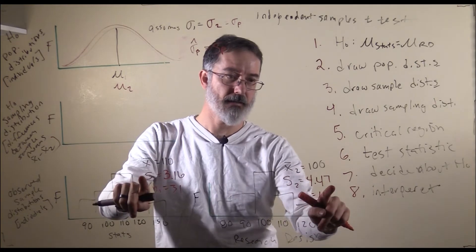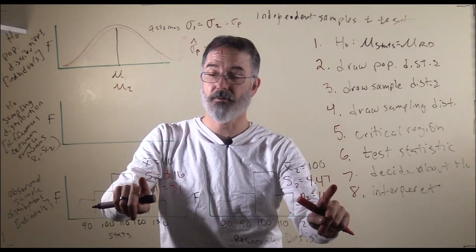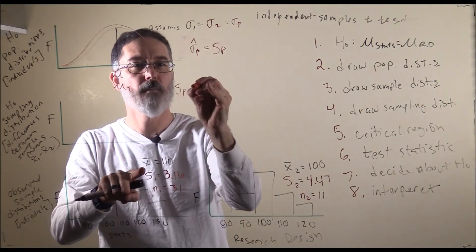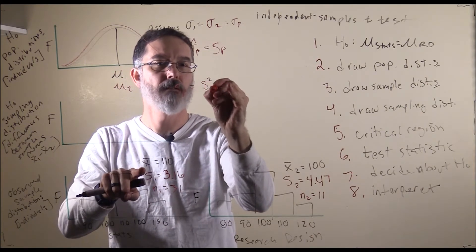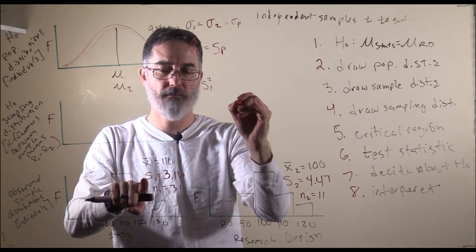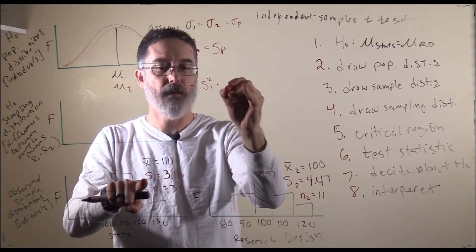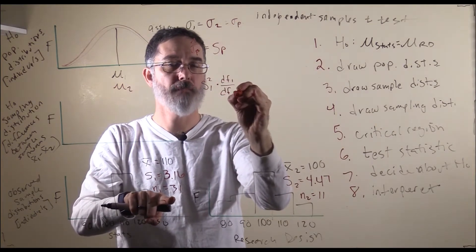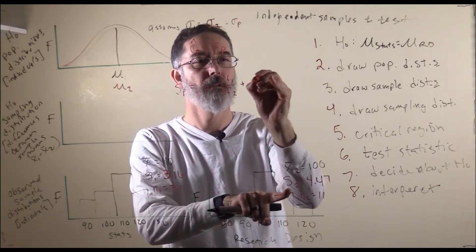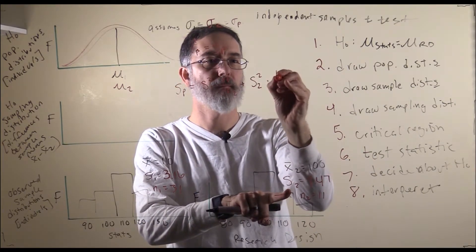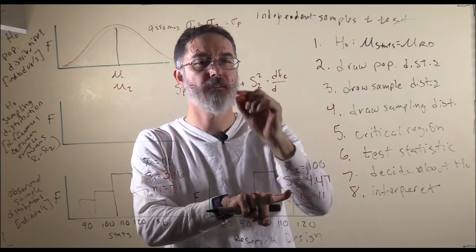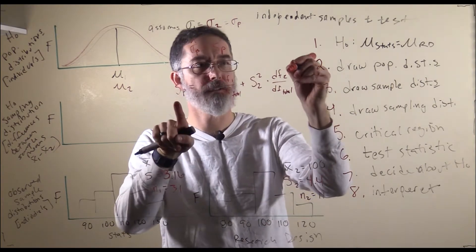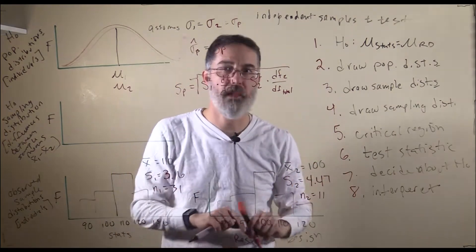A trick here is that we do not actually take the weighted average of the standard deviations — we switch over to the variances. So the formula for the pooled standard deviation is the variance of the first sample times its degrees of freedom divided by the total degrees of freedom, plus the variance of the second sample times its degrees of freedom divided by the total degrees of freedom. And since these are variances but we want a standard deviation, we will have to take the square root of that when we are done.